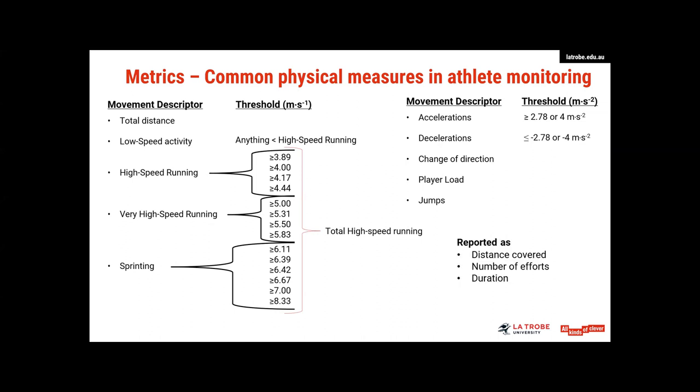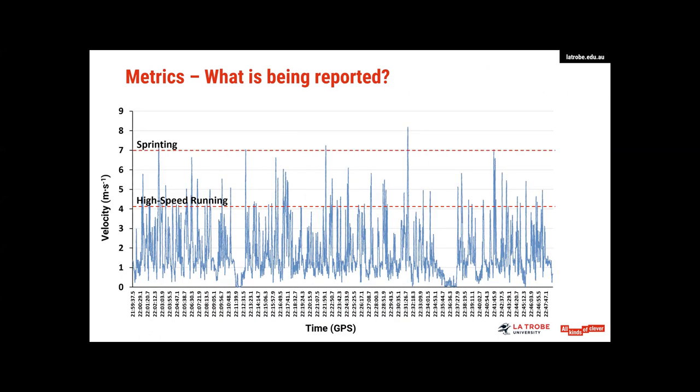So once we have these metrics, we can then report them in a number of different ways. Typically, we look at the distance covered, we could look at the number of efforts, or we could look at the duration we're spending in each of these speeds or movements. So if we then think what we're actually reporting on, this will be familiar to most of you who've worked with GPS devices before, it represents 45 minutes of a game of football.